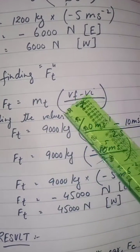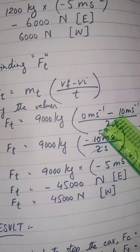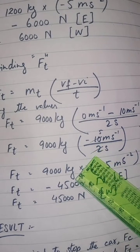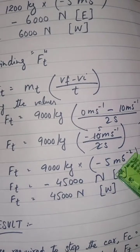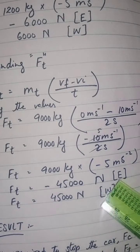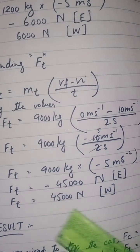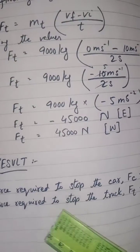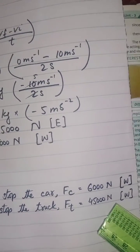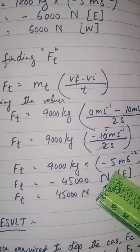For finding ft: ft = mt × (vf − vi) / t. Putting values: mt = 9000 kg, vf = 0, vi = 10 m/s, t = 2 s. (0 − 10) / 2 = −5 m/s². Multiplying: 9000 × 5 = 45000 Newton. The minus sign shows it is in the opposite direction, towards west. Result: force to stop the car = 6000 Newton and force to stop the truck = 45000 Newton, both towards west.